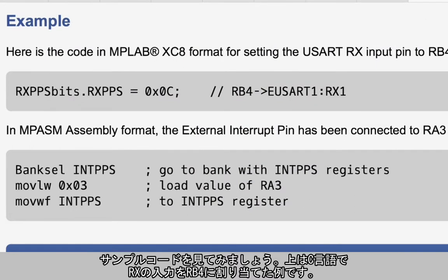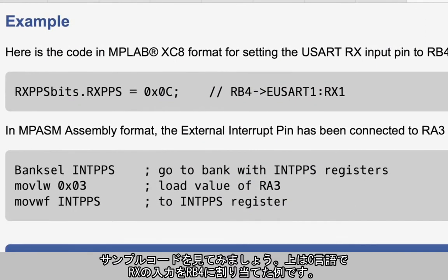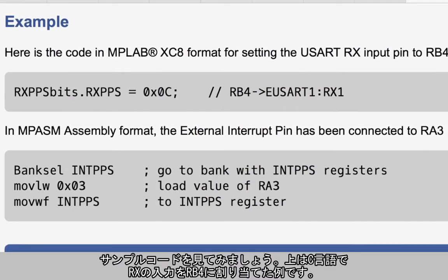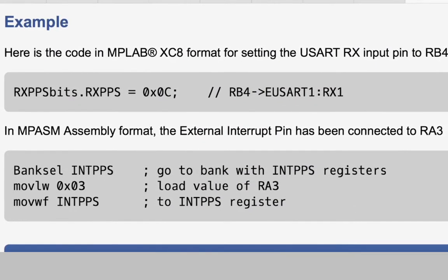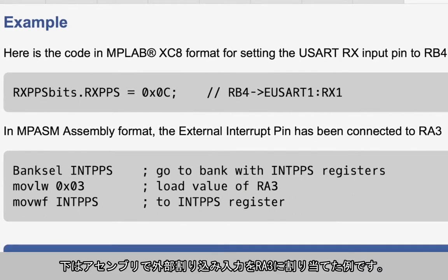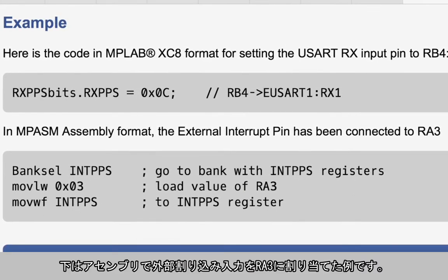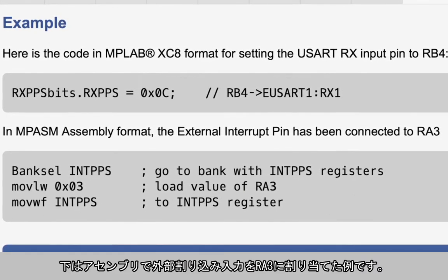Here are a couple of code examples where the receive input is connected to the RB4 pin, and an assembly example where the external input is connected to the RA3 pin.